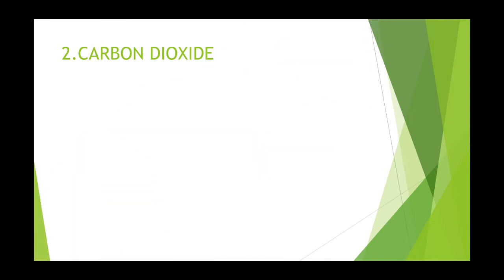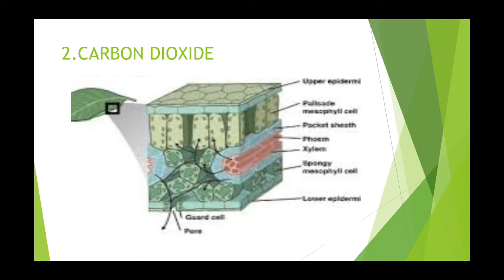The second raw material is carbon dioxide. Plants take carbon dioxide from the atmosphere. Carbon dioxide enters the leaves through tiny pores present on the surface of leaves. Such pores are called stomata.